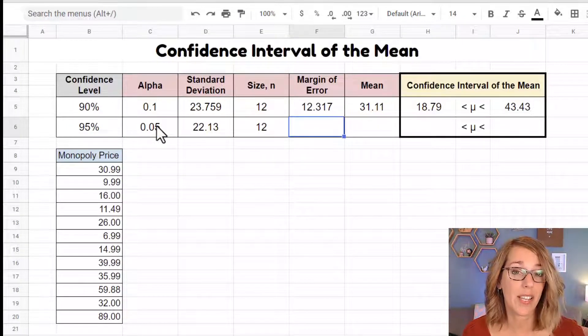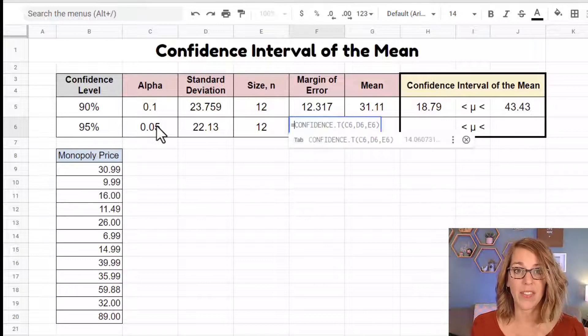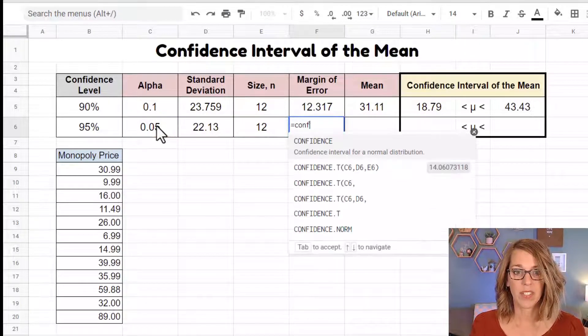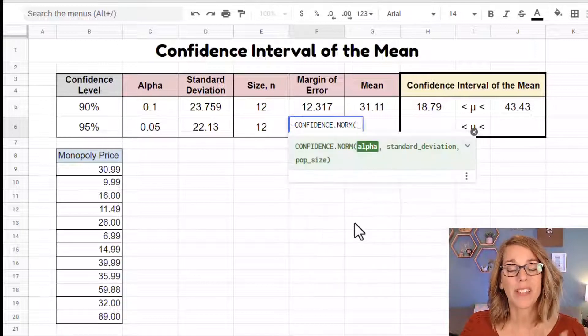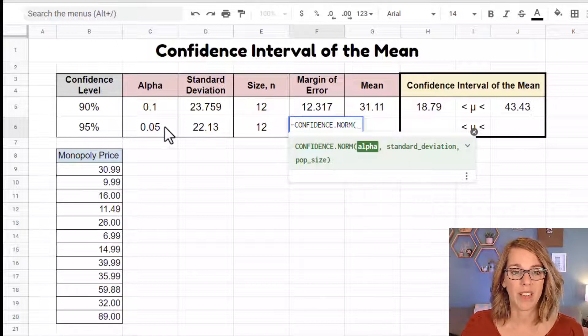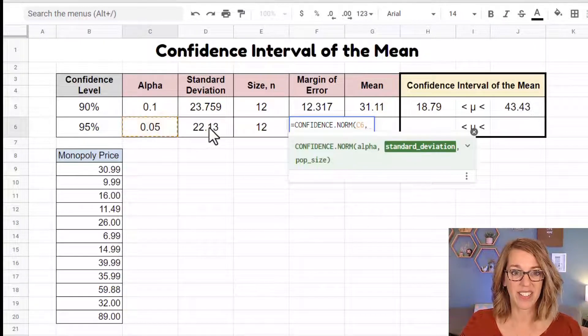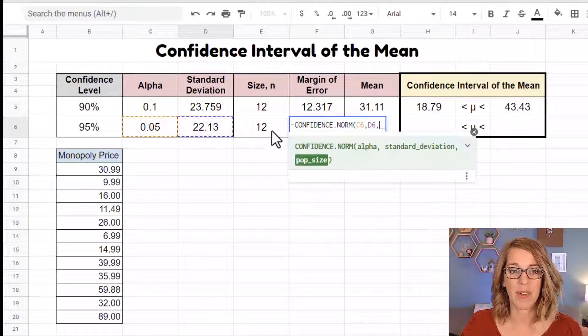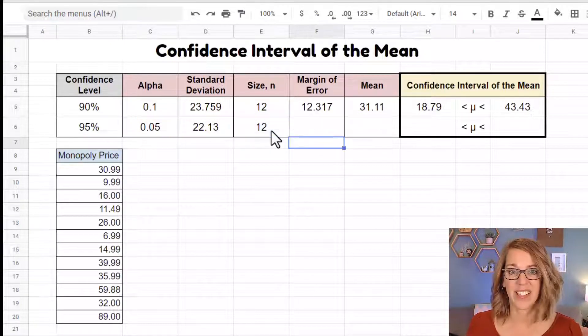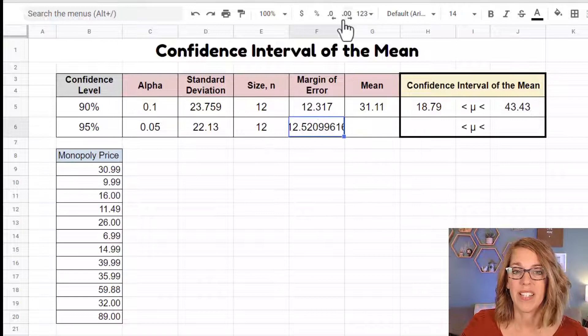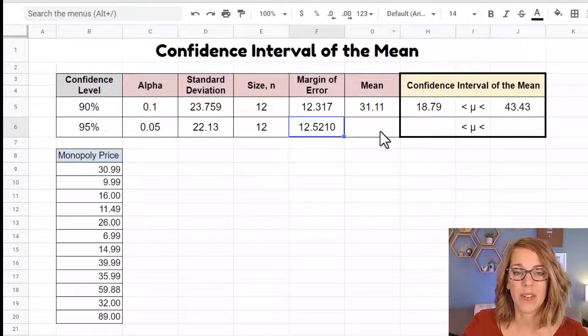And then to calculate that margin of error, I'm going to use the other confidence interval. So this is going to be confidence dot. I'm going to choose norm because I'm given the population standard deviation. I can use the normal distribution and it's prompting me again for alpha comma standard deviation comma sample size, enter.